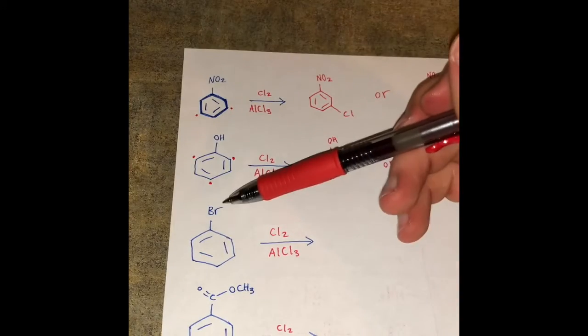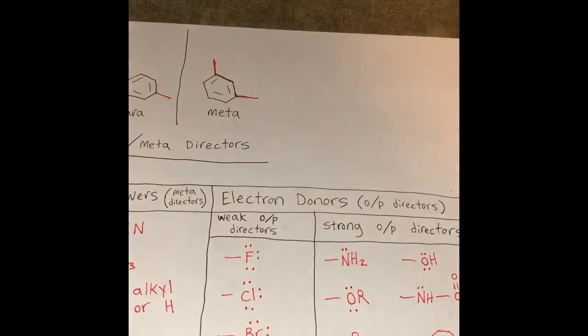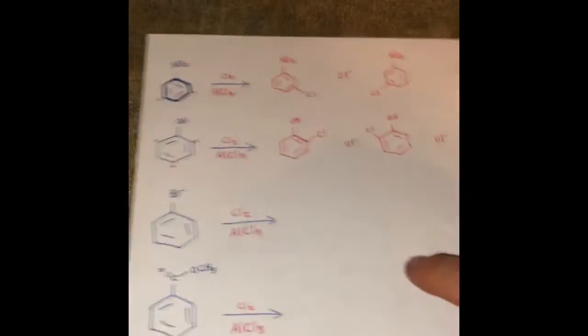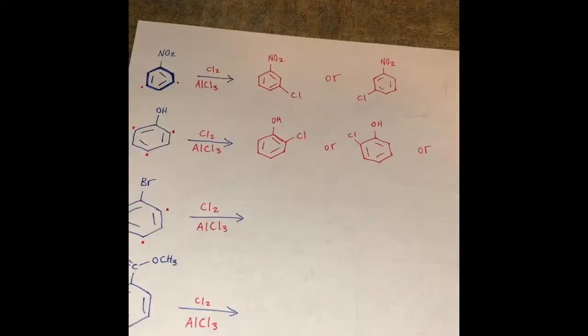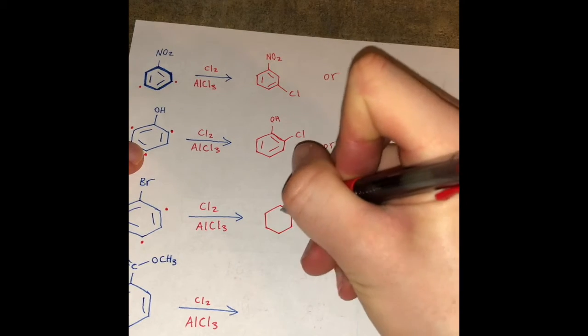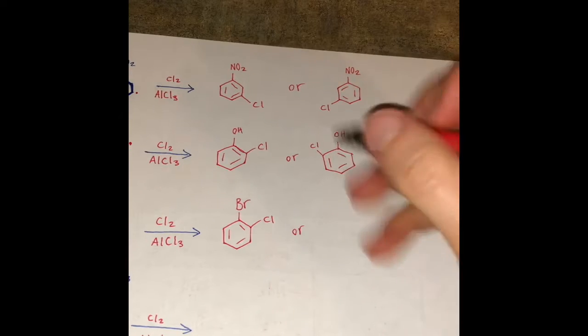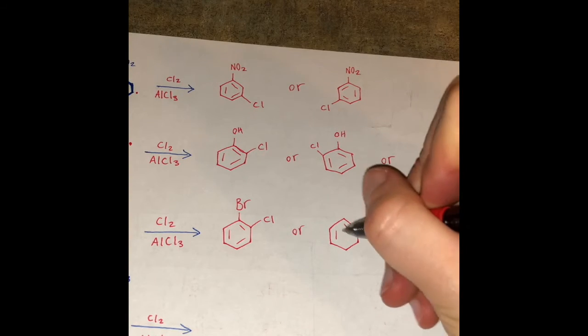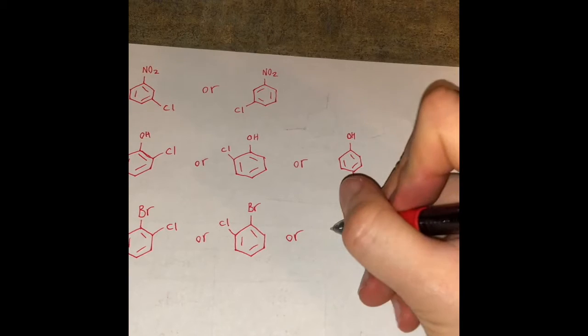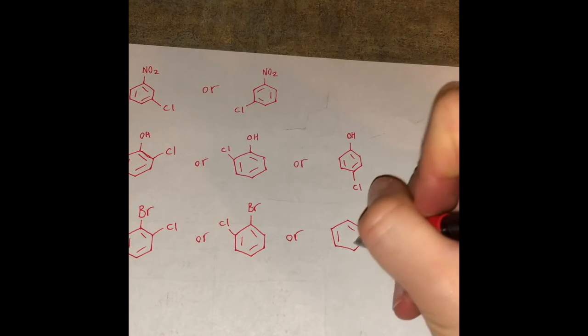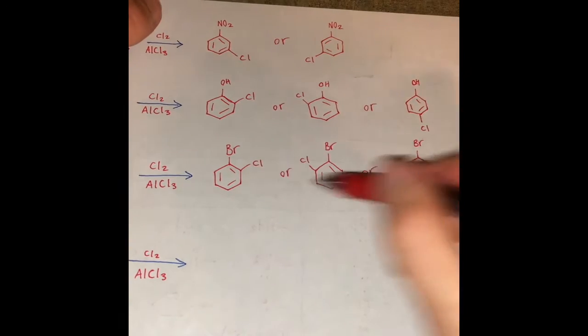Now we have a benzene with a bromine. Bromine is an ortho para director and it's a weak ortho para director. So bromine can direct to these positions. So again you can get any one of these three products.